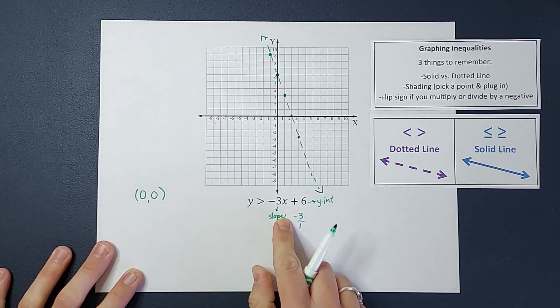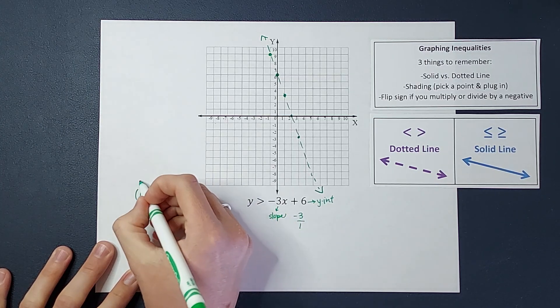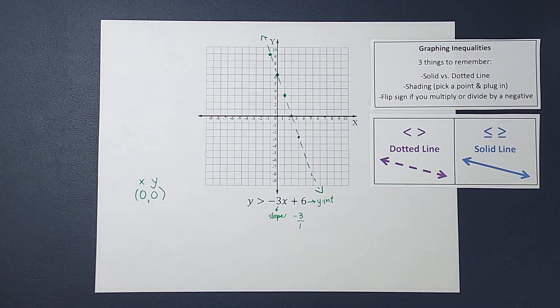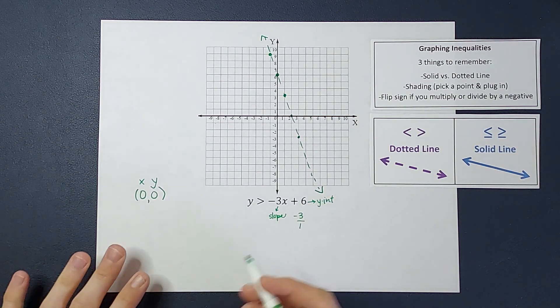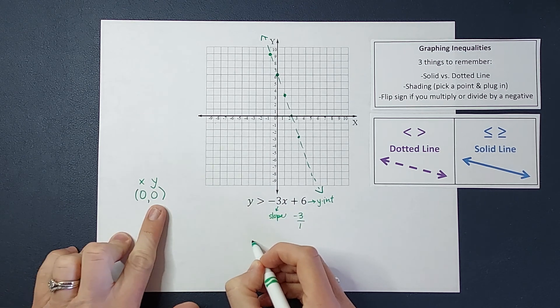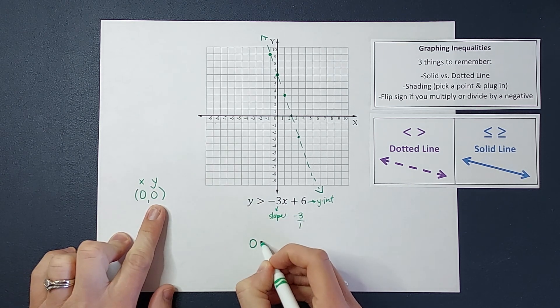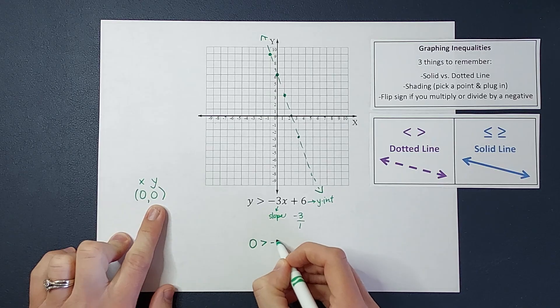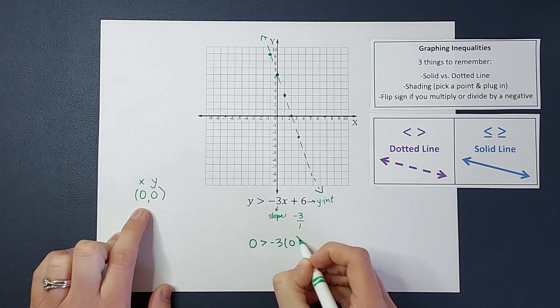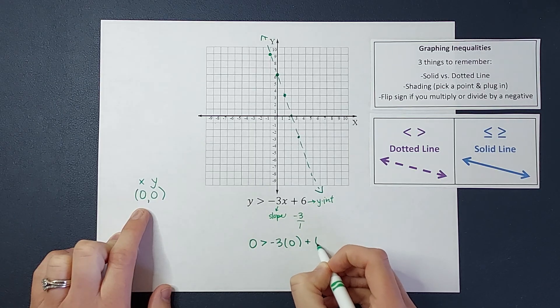And we are going to plug it in here. My first number is x and y. They're the same number, so it doesn't really matter, but we're labeling them for fun. So we're going to plug these in. So I'm going to have y, which we're plugging in 0, is greater than negative 3 times x, which we're plugging in 0, plus 6.